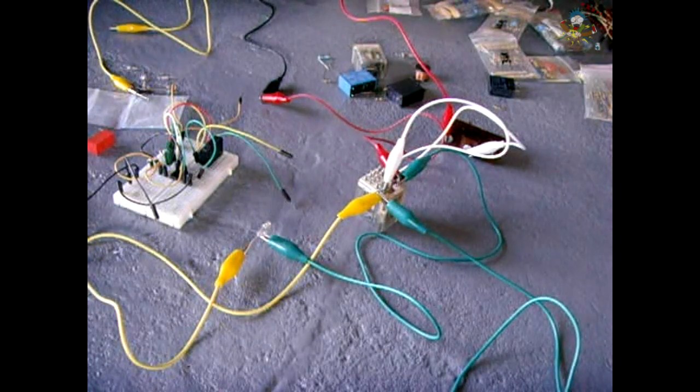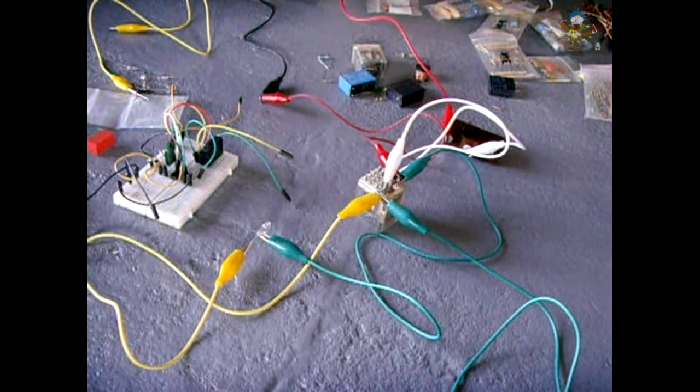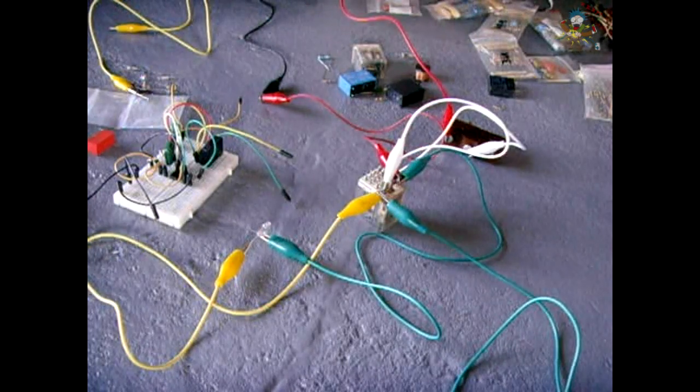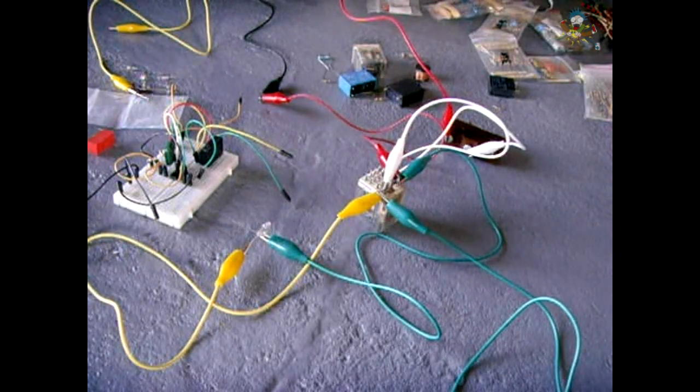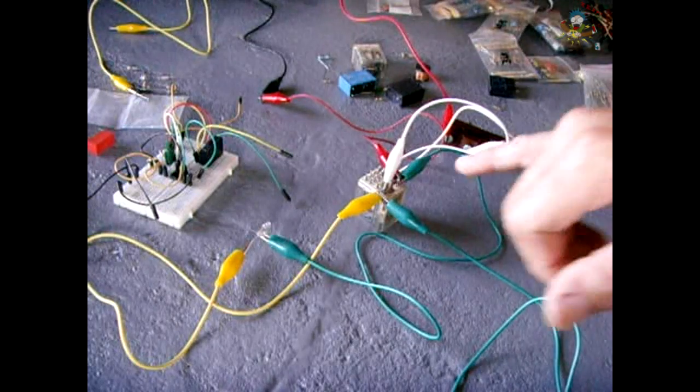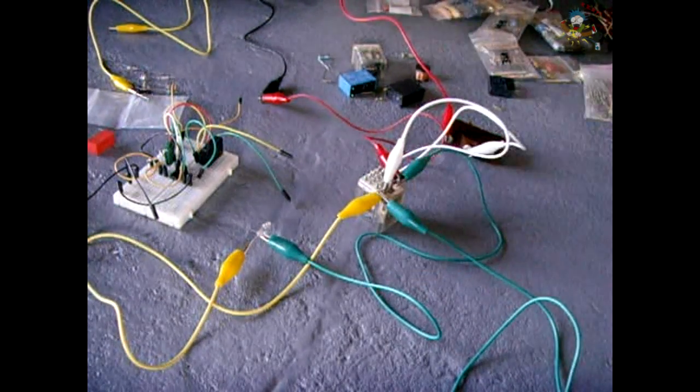Now in that video I showed you exactly what a back EMF spike looks like on an oscilloscope, and in this video I'm going to show you what it looks like coming right off the relay coil into a neon lamp.